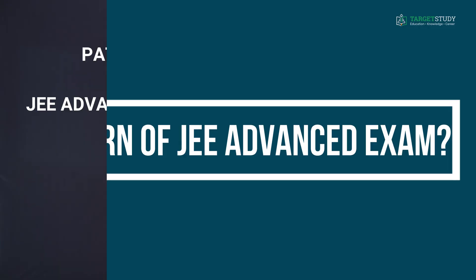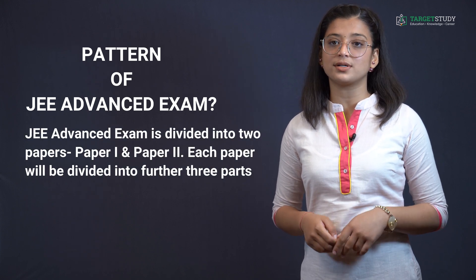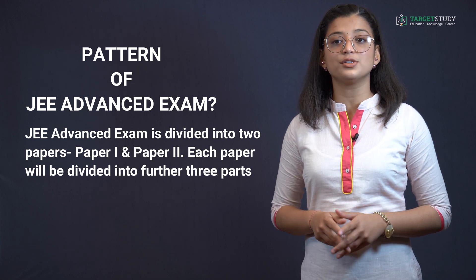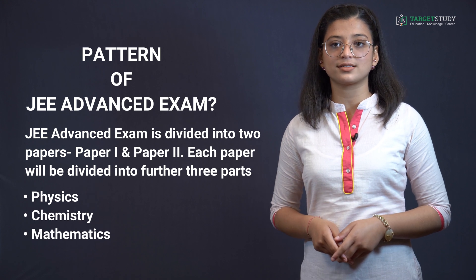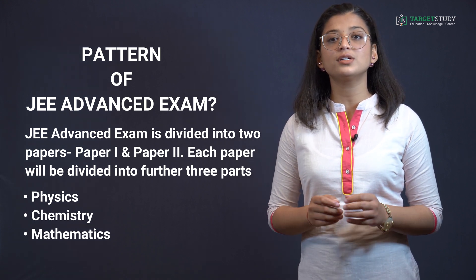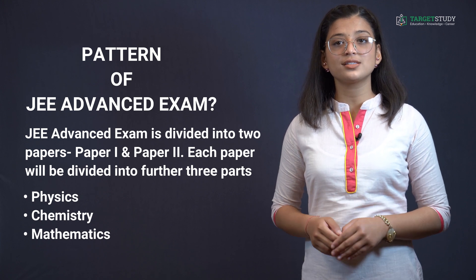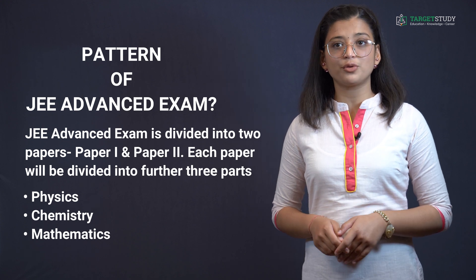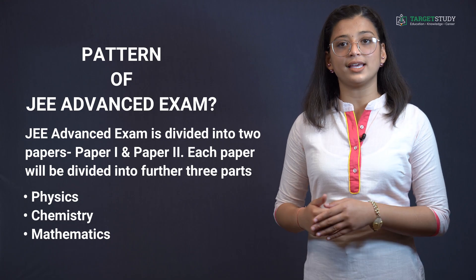Now I would like to tell you about the pattern of JEE Advanced exam. JEE Advanced exam is divided into two papers — Paper 1 and Paper 2. Each paper will be further divided into three parts: Physics, Chemistry, and Mathematics. These three parts will be further divided into three sections: multiple choice questions, numerical questions, and matching list questions. There will be negative marking for every wrong answer. Candidates can view the question paper either in English or Hindi.